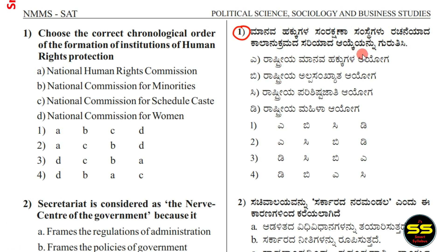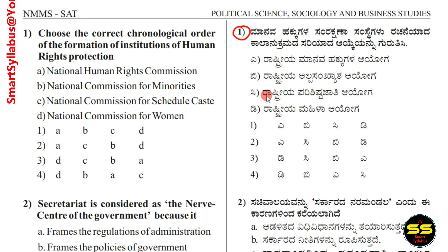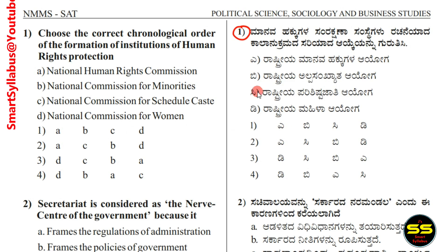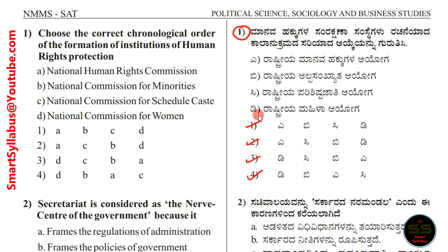Option A: Rastriya Malou. Option B: Rastriya Alpha Sankhyaat. Option C: Rastriya Parishish Tatiya Tribal. Option D: Rastriya Mahela. The answers are 83, 58, 99. There are options 2, 3, 4, 5 available.